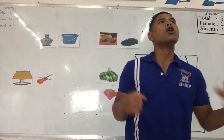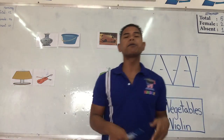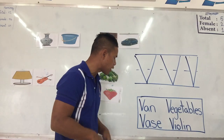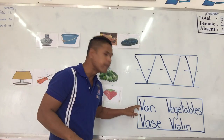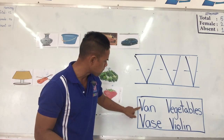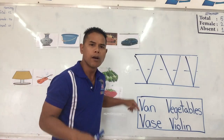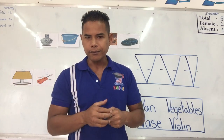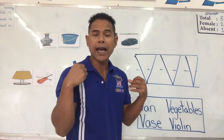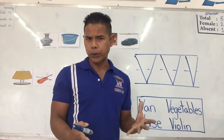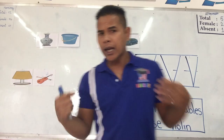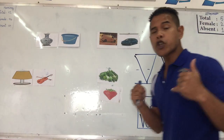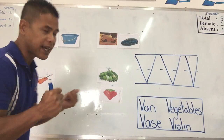Some of the objects that start with the letter V, the V sound, is van. Van. What is a van? Van is something that I drive on the road. Can you show me where van is?